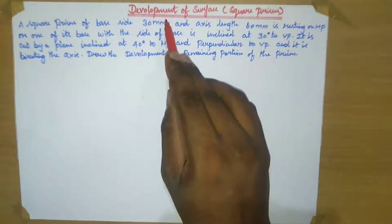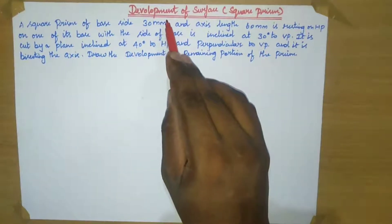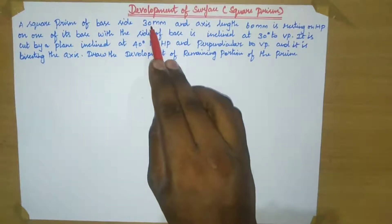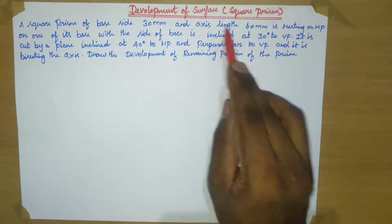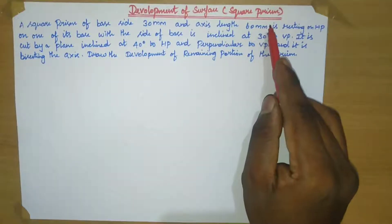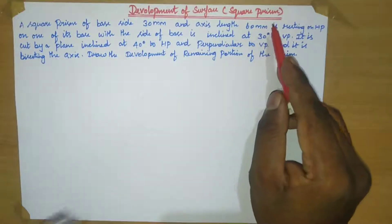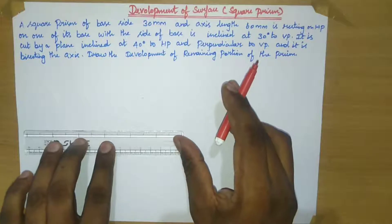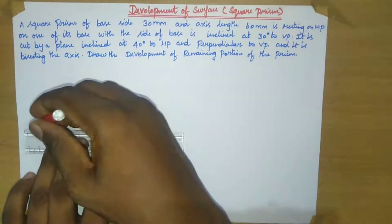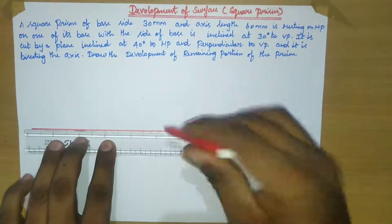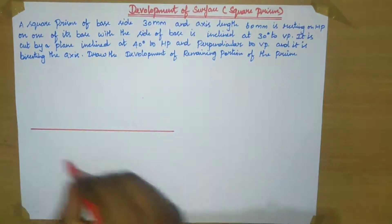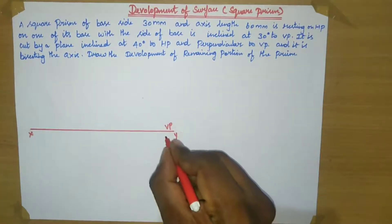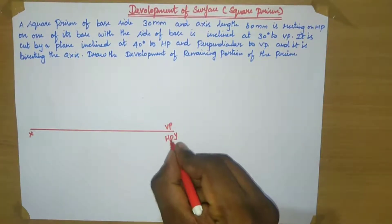We are going to draw the surface development of the square prism. So first draw one reference line. Name this line as X and Y. So this one is the vertical plate and this one is the horizontal plate.